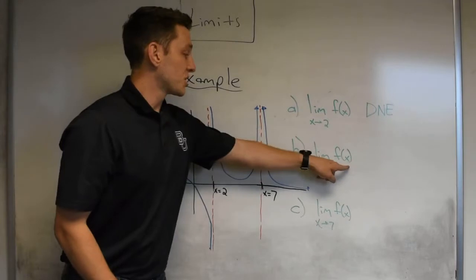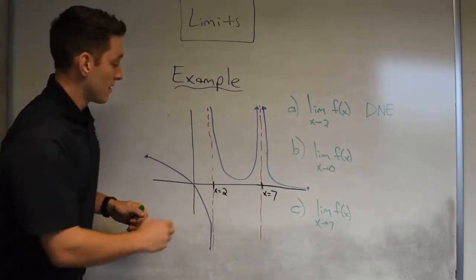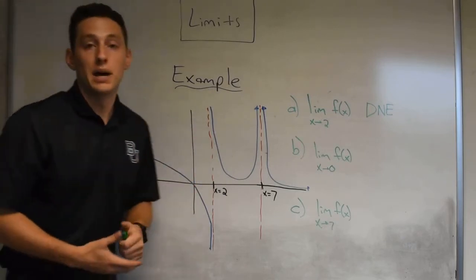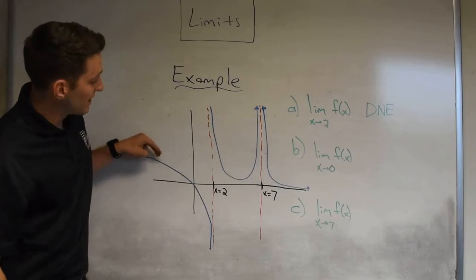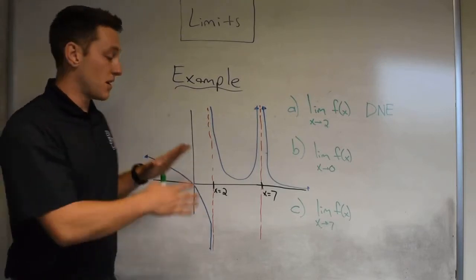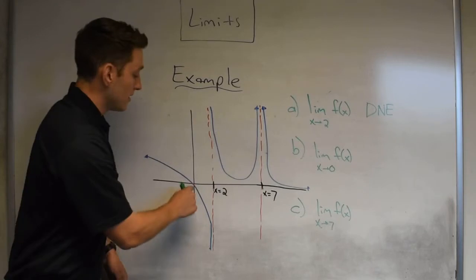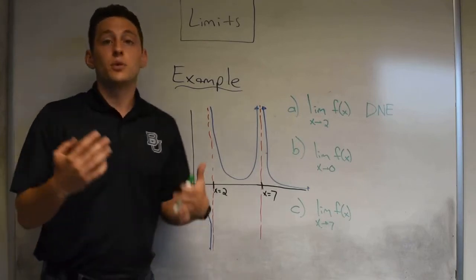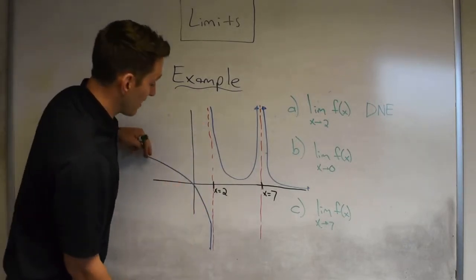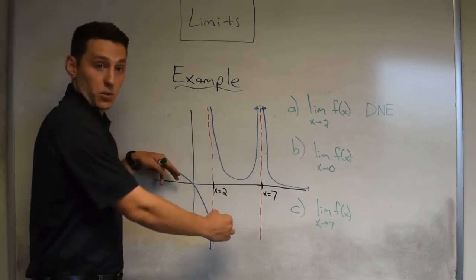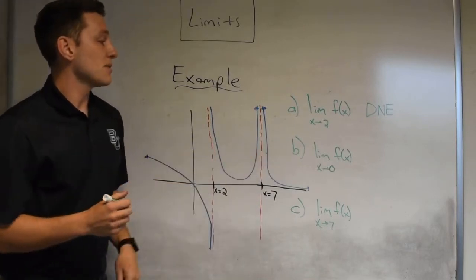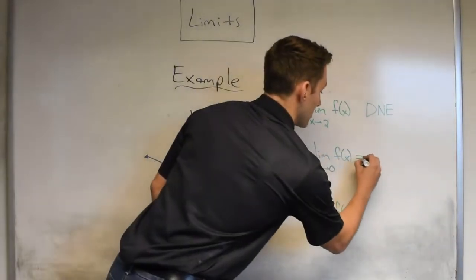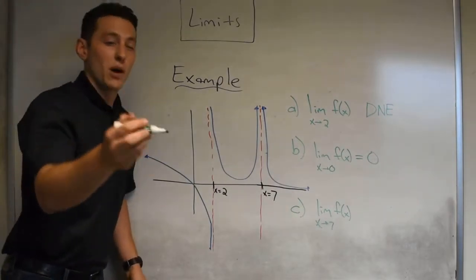Second question: what is the limit of our function as x approaches 0? Now I'm talking about x equals 0 — this vertical line here in black. As we approach from the left hand side, it looks like the y value based on those points should be at 0. And actually the same holds for the right hand side — as we approach it, the y value we would guess would land on 0. So since the guess from the left hand side equals the guess from the right hand side, we'd say the limit of our function as x approaches 0 is equal to 0.